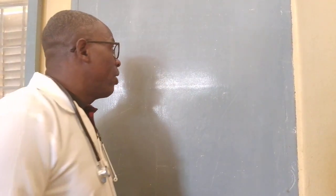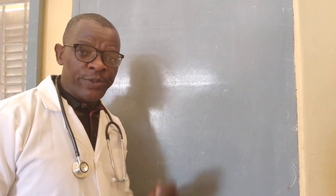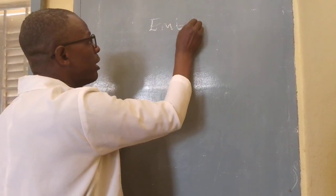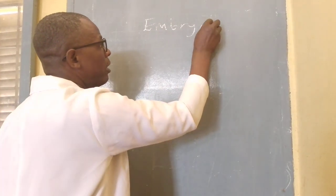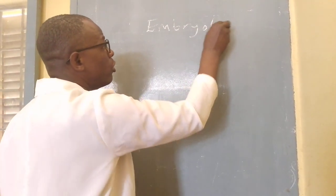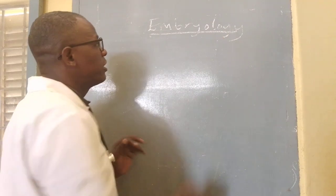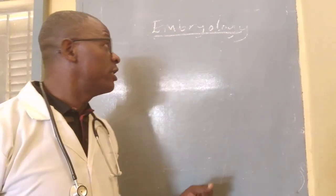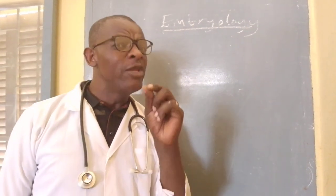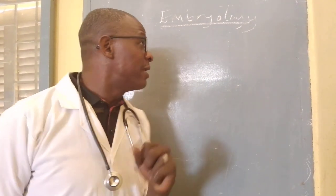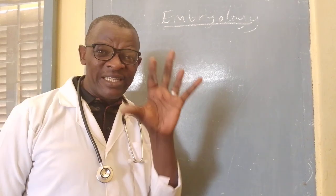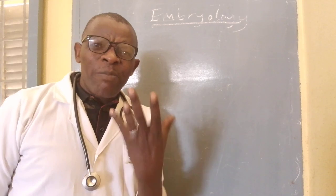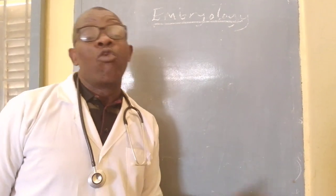We are teaching today on embryology — the study of life at the embryonic stage, life in the womb of a woman. I want to put it in very simple terms that everyone can understand. How does a baby form in the womb of a woman?